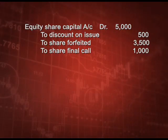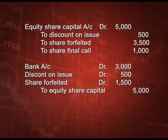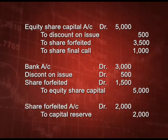When we reissue these shares at rupees 6, the entry will be bank account debit rupees 3,000 (500 into 6), discount on issue debit rupees 500 (500 into 1), and share forfeited debit rupees 1,500 (500 into 3, because you still need rupees 3 more discount as issued at rupees 6), to equity share capital rupees 5,000. Out of total share forfeited rupees 3,500, we used rupees 1,500, so the remaining rupees 2,000 is profit: share forfeited account debit to capital reserve rupees 2,000.